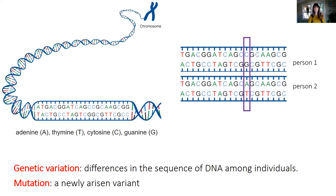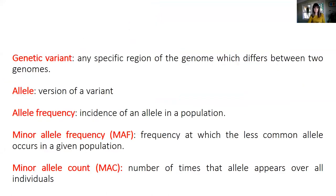We tend to look only at one of the two strands. If we do that, we will see that person 1 has C in this position, which may be the same as the reference panel, while person 2 has A in the same position. You will see many definitions to talk about some concepts, but for now, we will be saying that a genetic variant is any specific region in the genome which differs between people. We are going to call allele to any of the versions of this variant, so in the previous example, A would be one version of the allele, and C would be the other version.